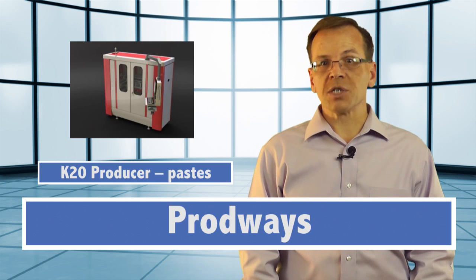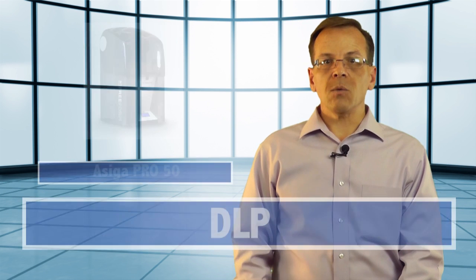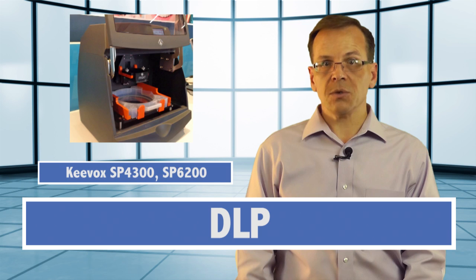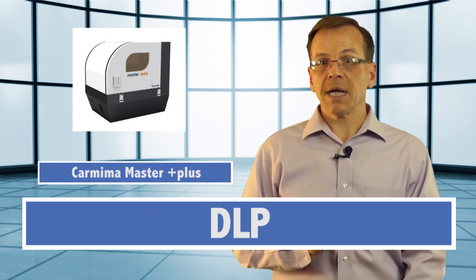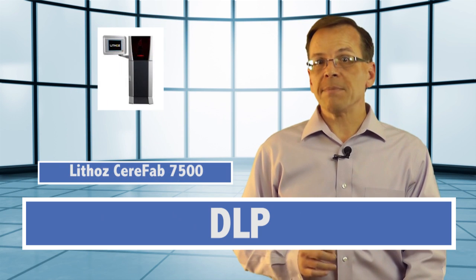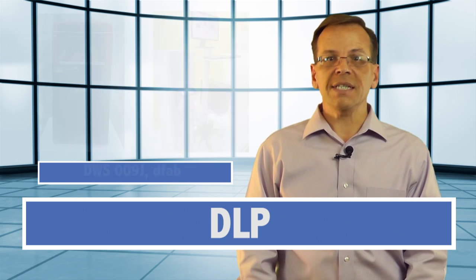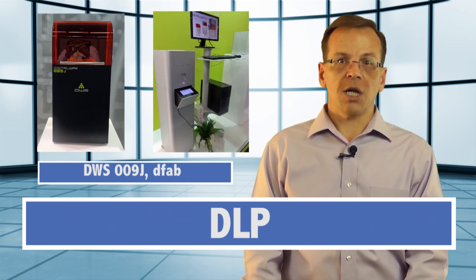My producer is saying that time is running short, so I am just going to give a quick mention to other new VAT Photopolymerization 3D printers. For DLP, we now have Asiga's Pro 50, Keybox's SP4300 and SP6200, Karima's Master Plus, Litho's Seraphab 7500, which by the way makes ceramic parts, and DWS's 009J, plus its DFAB unit, which will be released early 2014.